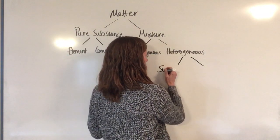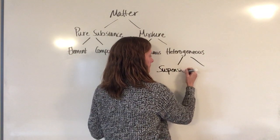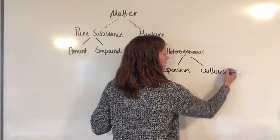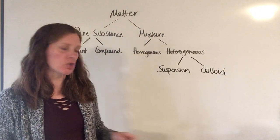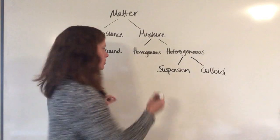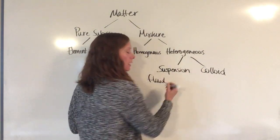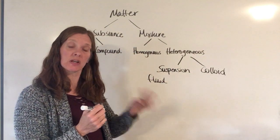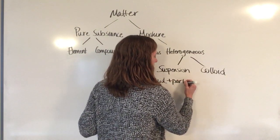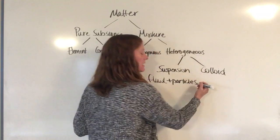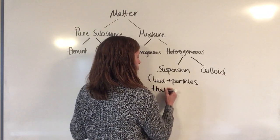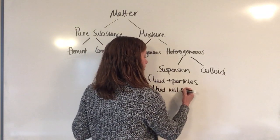A suspension is a type of heterogeneous mixture where you have a fluid — remember that's either a liquid or a gas — and you have particles mixed into that fluid. If you leave the suspension sit long enough, the particles are going to settle out and fall to the bottom.